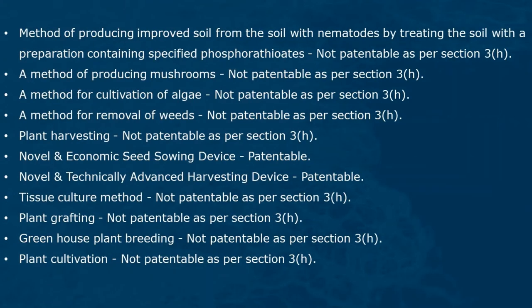A method of producing improved soil from soil with nematodes by treating the soil with a preparation containing specified phosphorothioates is not patentable as per section 3h. A method of producing mushrooms, a method for cultivation of algae, a method for removal of weeds, and plant harvesting are not patentable as per section 3h. A novel and economic seed sowing device is patentable. A novel and technically advanced harvesting device is patentable.